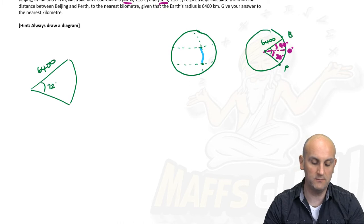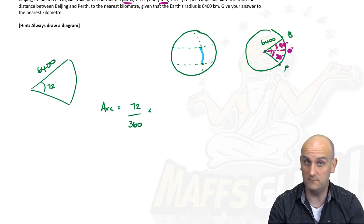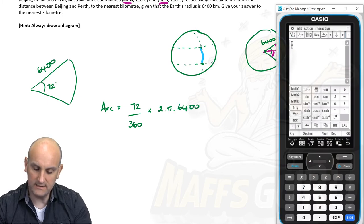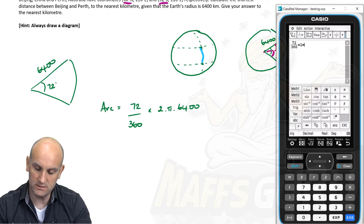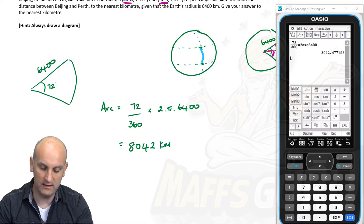The arc length equals the fraction of the circle times the circumference: 72 over 360 times 2 times pi times the radius of 6,400. Firing up my CAS calculator: 72 divided by 360, multiply by 2 times pi, times 6,400. That gives the staggering distance of 8,042 kilometres to the nearest kilometre.